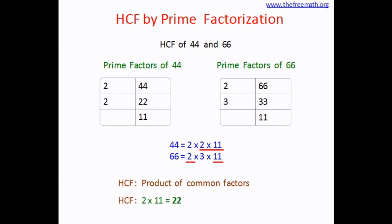Let's take a product of it to get the highest common factor. So the product is 22 and 22 is the highest common factor.